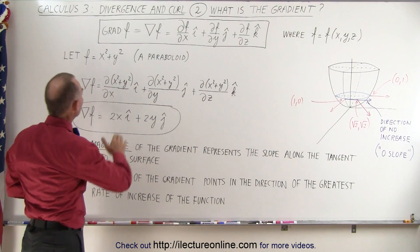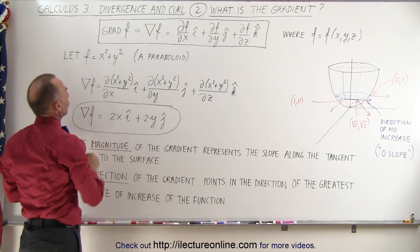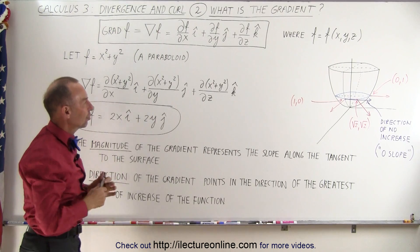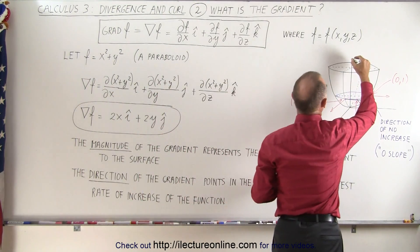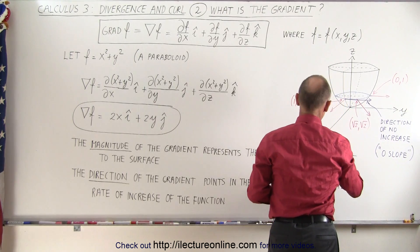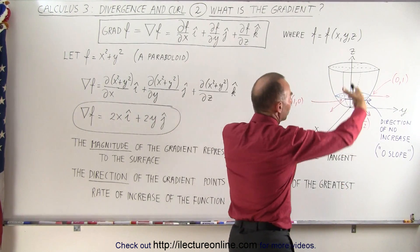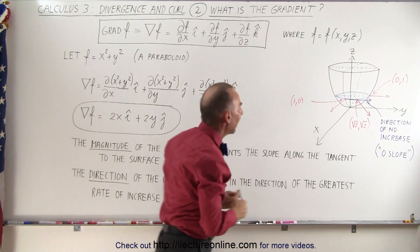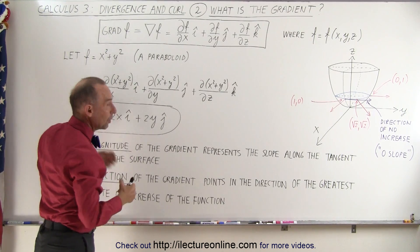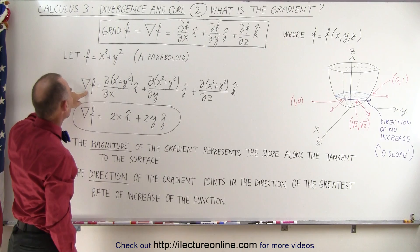If our function is f equals x squared plus y squared, this gives you a paraboloid in 3D. If this axis is the z-axis, this is the y-axis, and this is the x-axis, you can see a three-dimensional paraboloid. If you now take the gradient — the del operator acting on that scalar function — notice what happens.